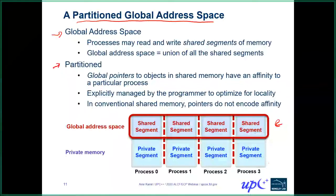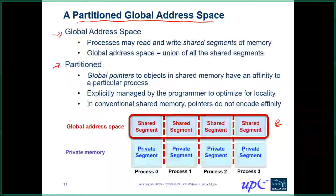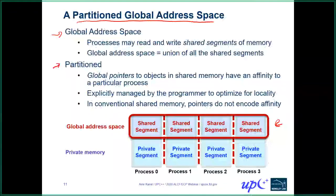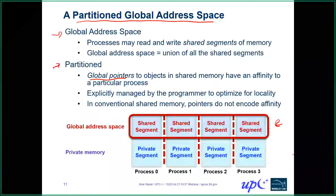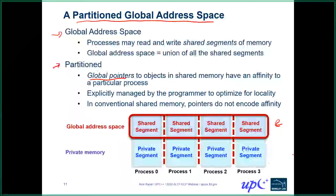Because the global address space is constructed from different shared segment partitions, that's where the 'partition' part of the nomenclature comes from. When we create an object in memory in the global address space, it's created in some partition. When we obtain a pointer for that, we have something called a global pointer, which includes both the memory address and which process created this particular object — encapsulated in the pointer abstraction itself.